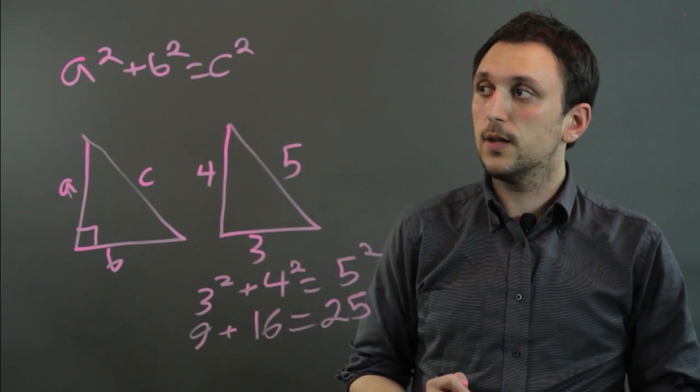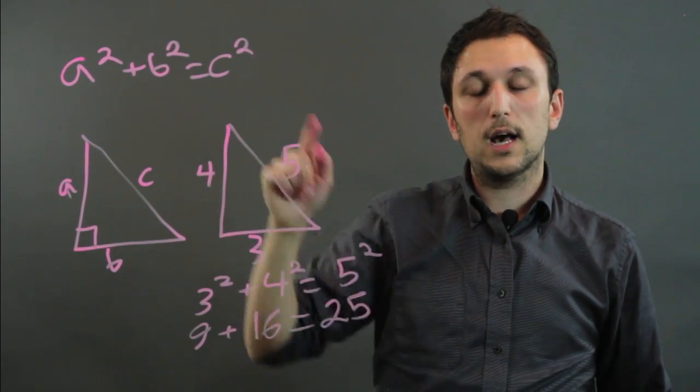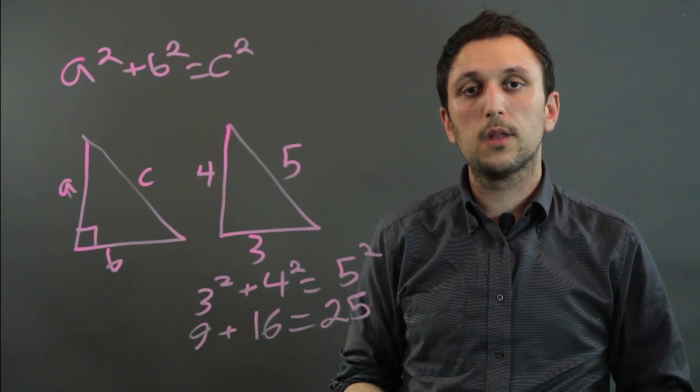So when you're doing the Pythagorean theorem, always remember a squared plus b squared equals c squared, where c is the hypotenuse. I'm Charlie Kesov, and you just learned how to figure out the Pythagorean theorem. Thanks a lot.